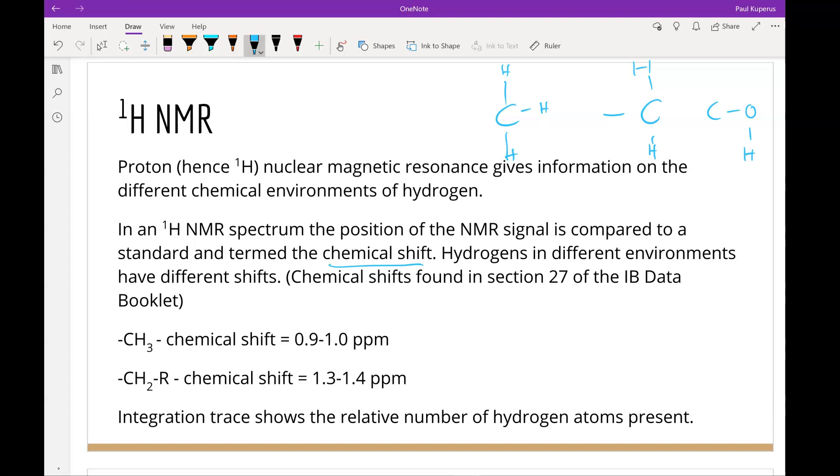Finally, we have the integration trace, which can be shown with either bars or numbers or a line or a step line. That tells us how many hydrogen atoms are present within that chemical shift.